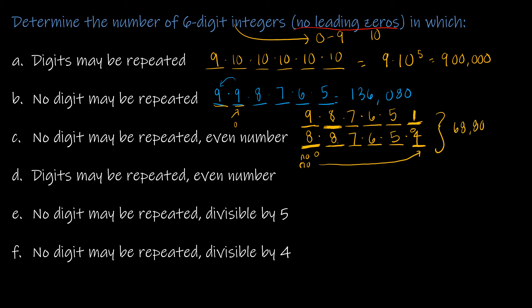Part four: digits may be repeated, even number. The first digit has 9 options (no leading zero), the next four digits each have 10 options, and the last digit must be even — 0, 2, 4, 6, or 8 — giving 5 options. So the answer is 9 × 10⁴ × 5 = 450,000.